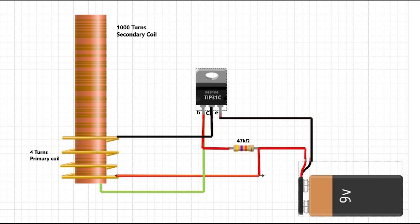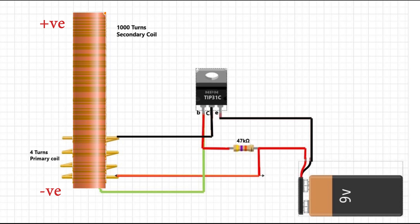At first, when we turn on the power supply, the voltage in the primary coil will rise from zero to maximum. And this sudden rise of voltage induces a voltage inside the secondary coil and thus making the base of the transistor negative.